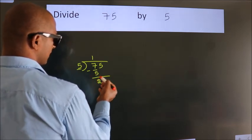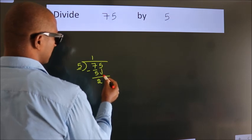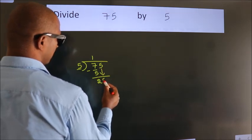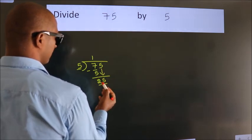After this, bring down the beside number. So, 5 comes down. So, we have 25.